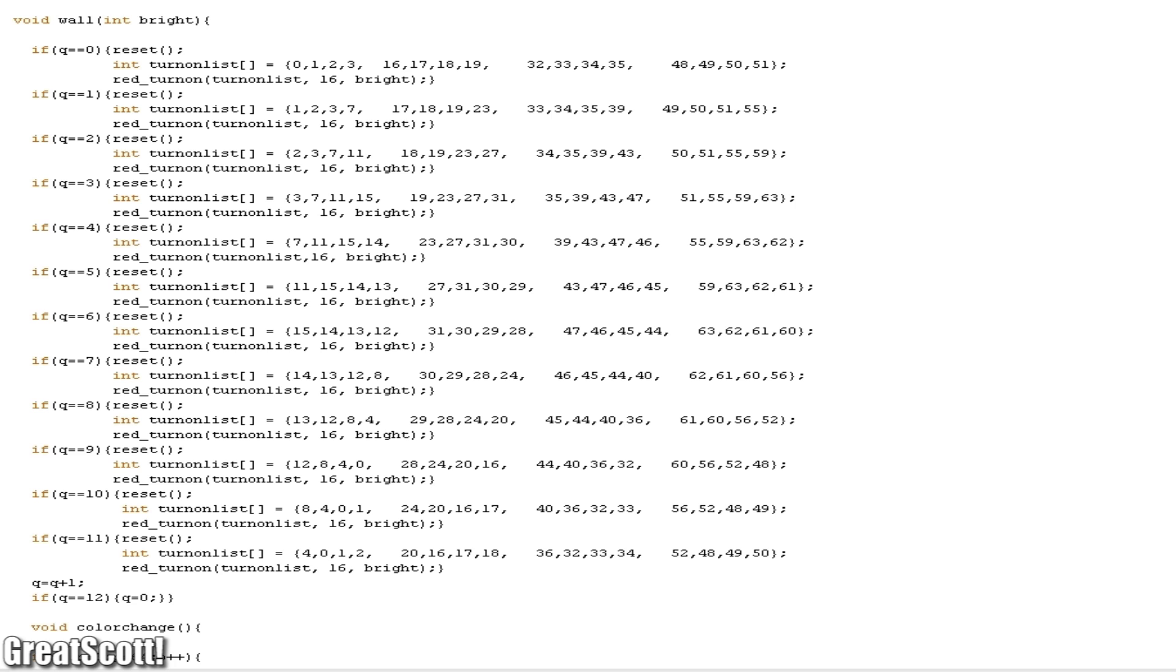As you can see we have 12 static pictures. At the beginning of each if statement we use the reset function, which basically turns all red, green and blue LEDs off. Now I define my red LEDs, which I want to turn on. Labeled from 0 to 63. And in the last step I use my red turn on function to turn on the lights.